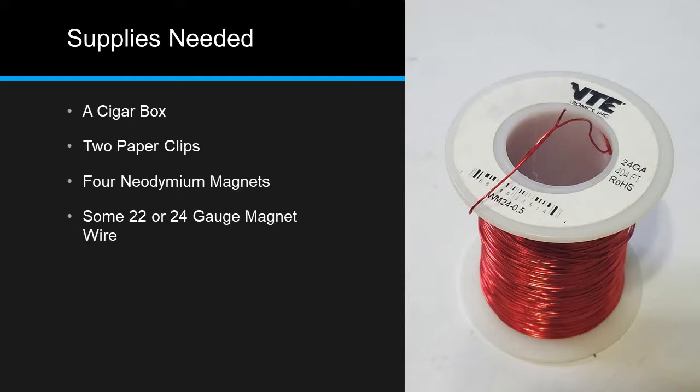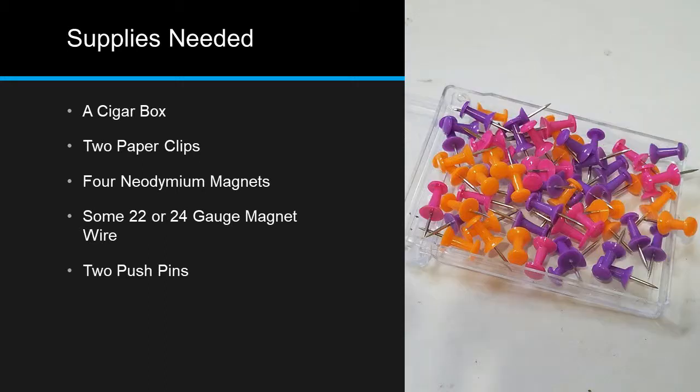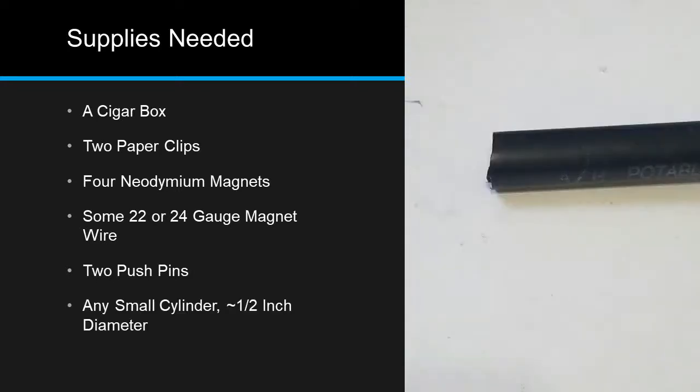A spool of 22 or 24 gauge magnet wire. This is the type of wire that is coated with enamel instead of a plastic insulator. You will also need two push pins and any small cylinder that is about a half inch in diameter. You could use a magic marker, for example.